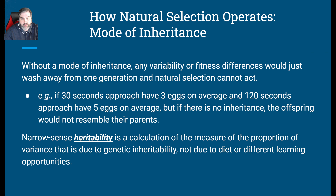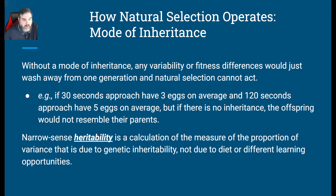But without a mode of inheritance, any variability or fitness differences would just wash away from one generation. Natural selection cannot act. For example, if 30-second approachers have three eggs on average and 120-second approachers have five eggs, but there's no inheritance, the offspring would not resemble their parents and there's no variation in that case.